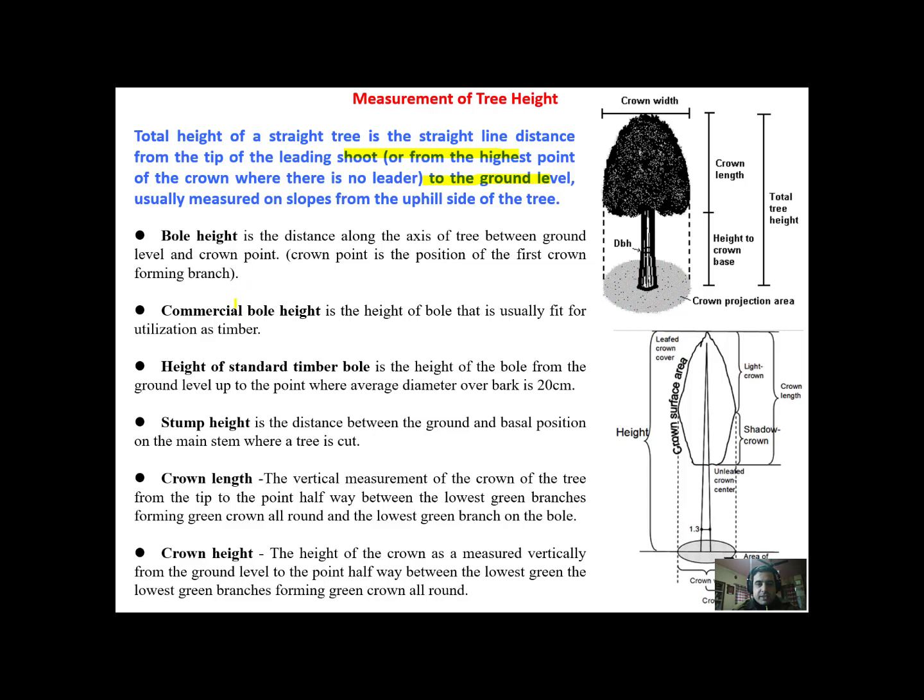There are many terms associated with height of the tree. One of them is bole height. It's the distance along the axis of the tree between ground level and crown point. Crown point is the position of the first crown forming branch, that is the distance from ground level to the first branch that forms part of the crown.